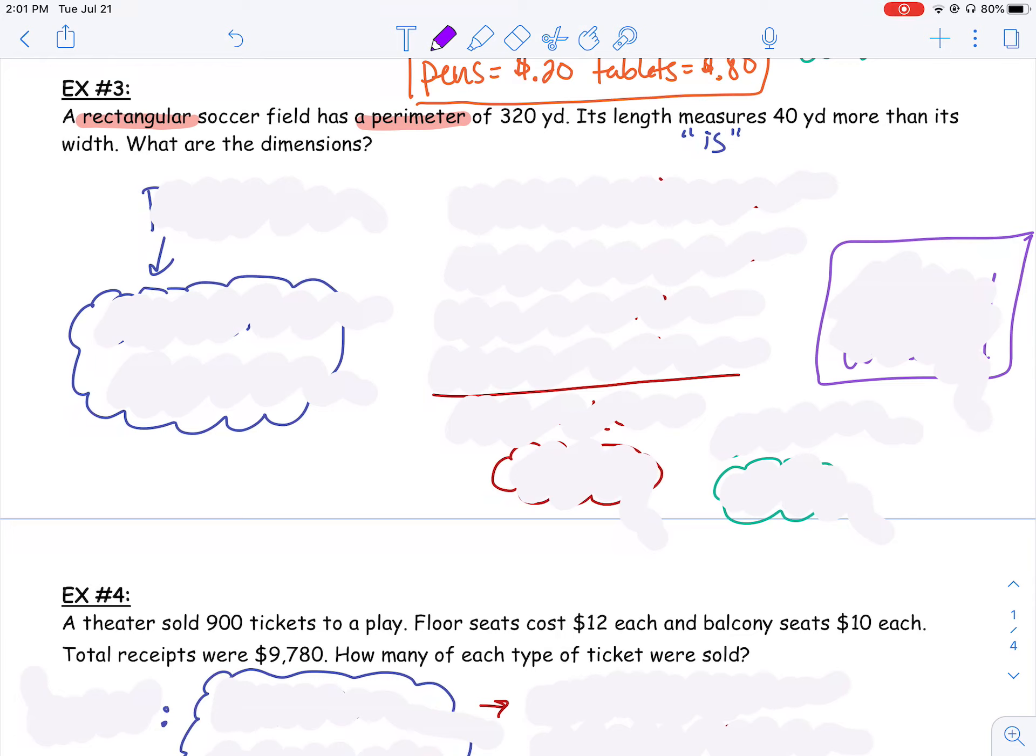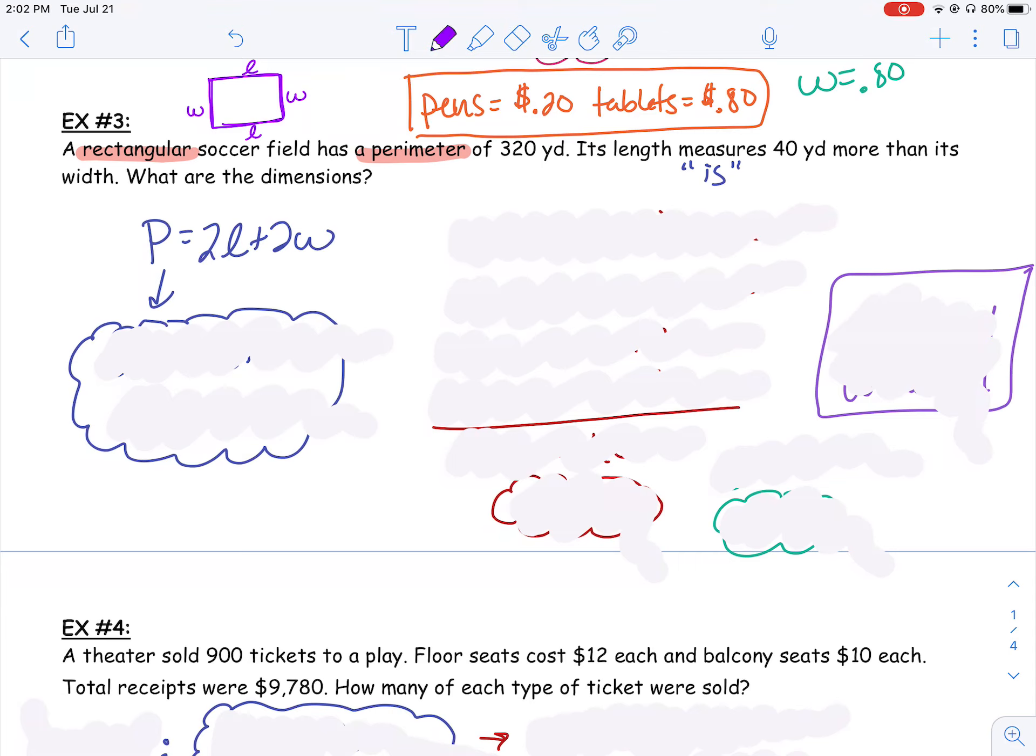So I can actually make an equation that says that. I can say that the perimeter is length plus width plus length plus width, or could I say perimeter equals two lengths plus two widths? And do we know anything about the perimeter? Well yeah, it says in the first sentence that the perimeter is 320 yards. So I can actually plug in 320 to my perimeter.